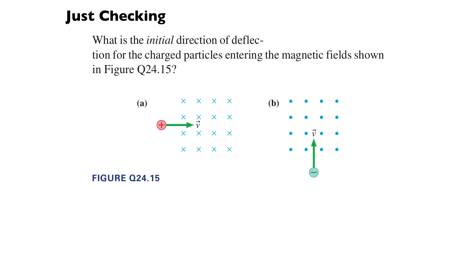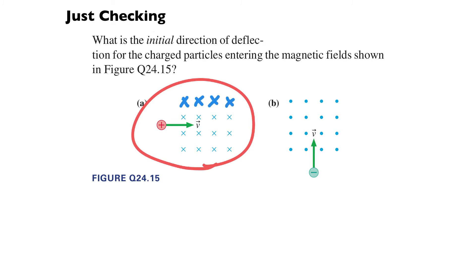Let's do a quick check. A charged particle comes into a region where the magnetic field is going into the screen - shown as x's. A positively charged particle is moving to the right. What is the initial direction of deflection? Using the right-hand rule: velocity is to the right, field is into the paper, so the force is directed toward the top of the paper. The initial direction of deflection will be upward - the particle curves upward.